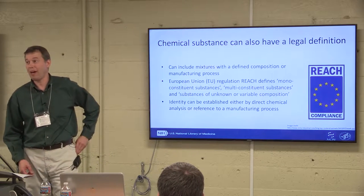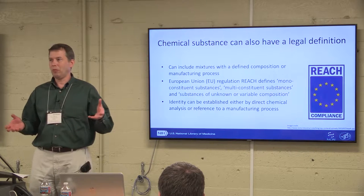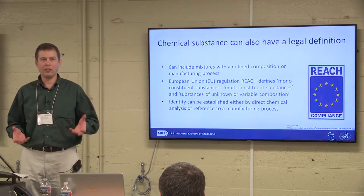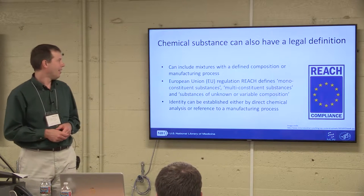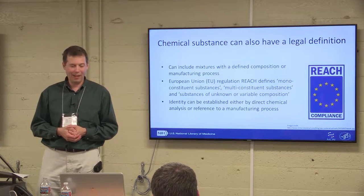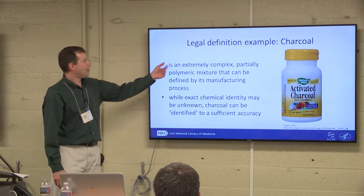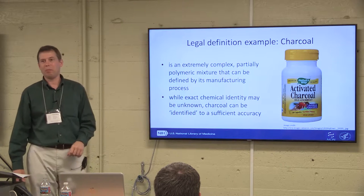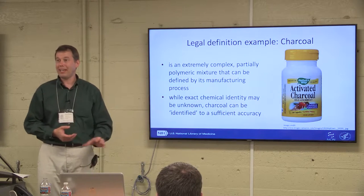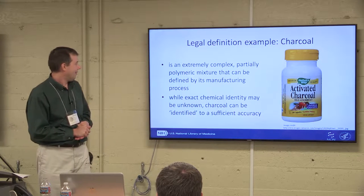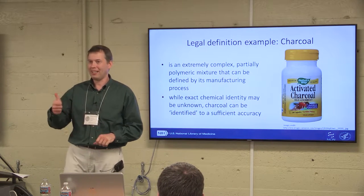It may be that you're just referencing some process. Lots of natural products could be this way — you have some extract where they haven't isolated what the components are, because it's a whole mixture. Think of cocaine: it's not necessarily pure; there are potentially many different things in there. Charcoal is another example — it's extremely complex, partially a polymer-type thing. You can't quite say what it is, but you can identify it. It's identified to a sufficient accuracy, and that's good enough. We'll call that a chemical substance.